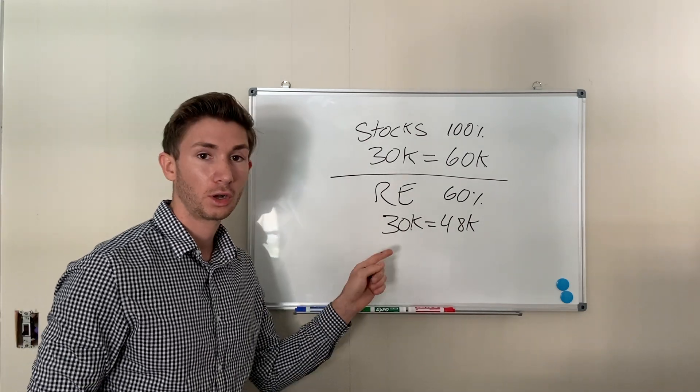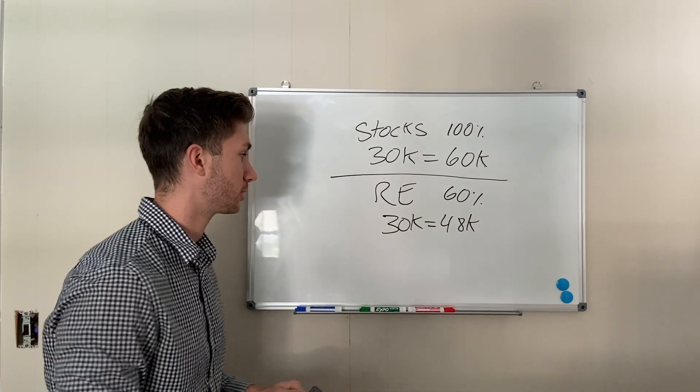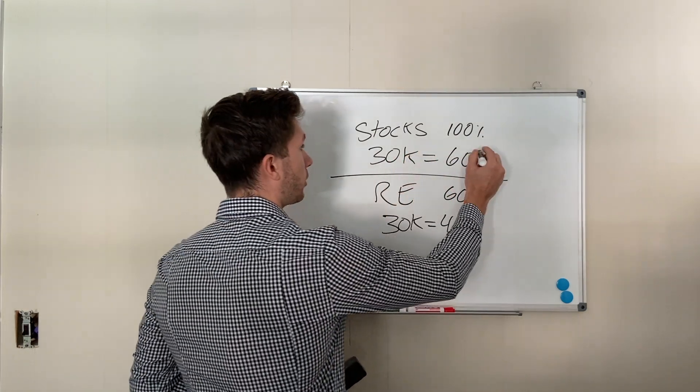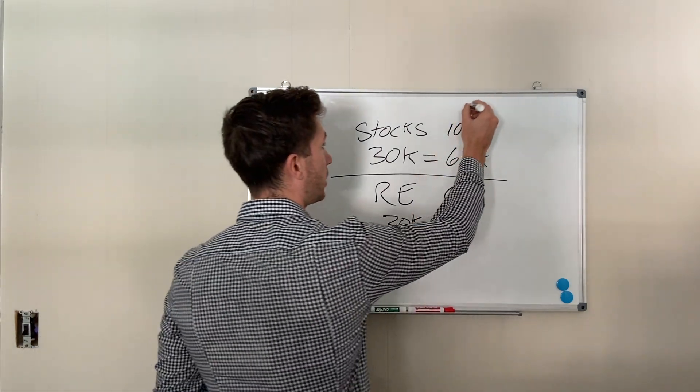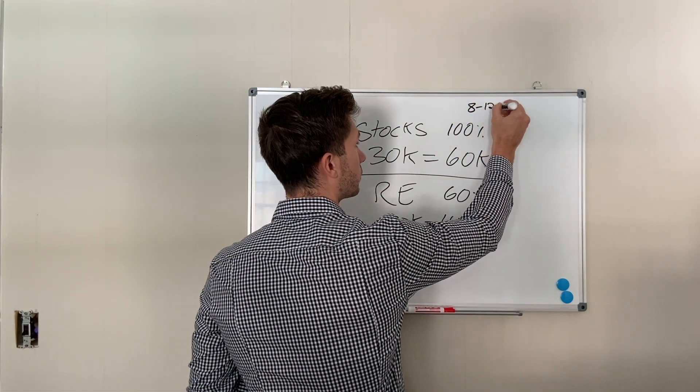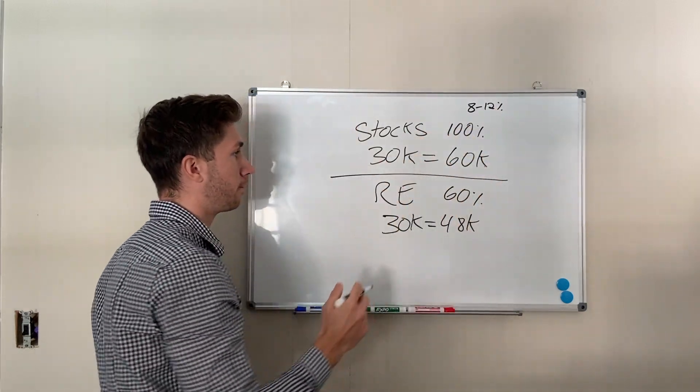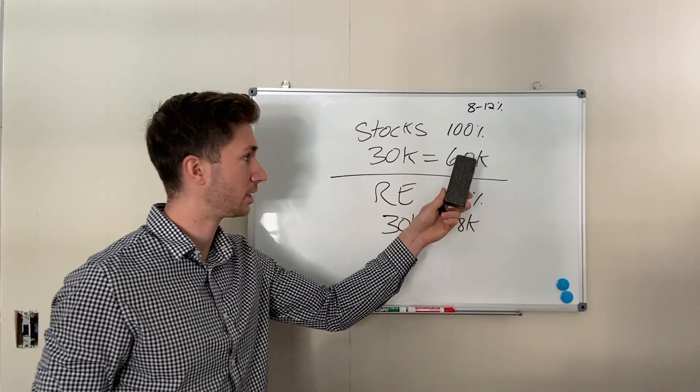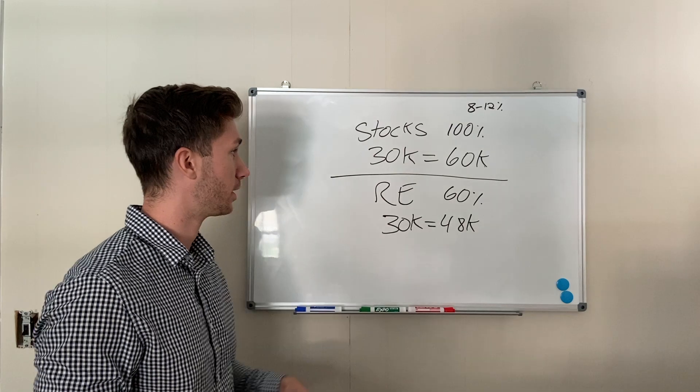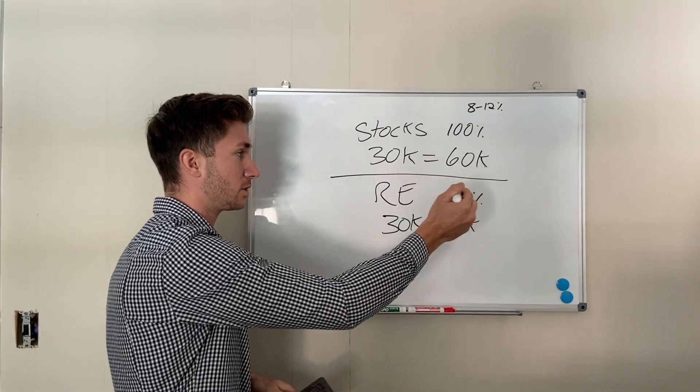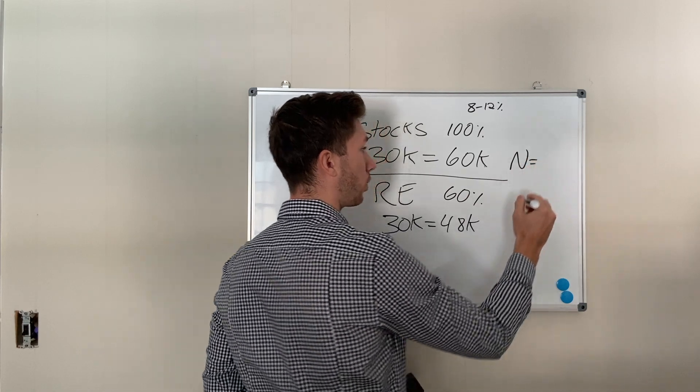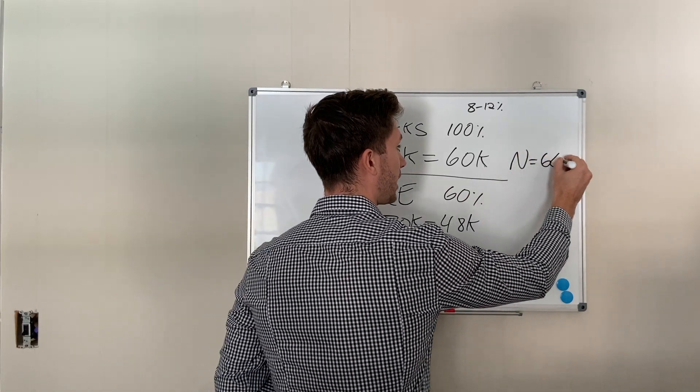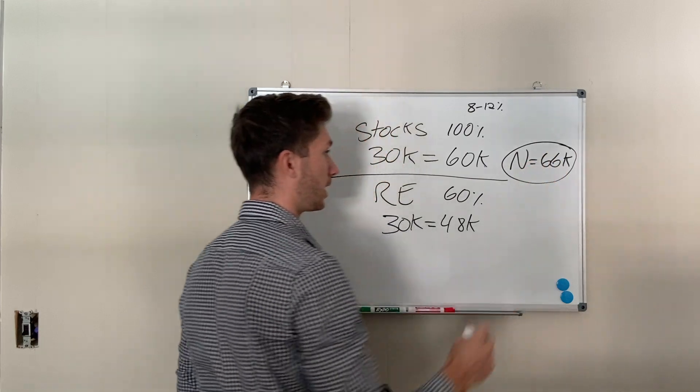And here's why. Let's take a look at one year, what my net worth is. So in the first scenario, stocks appreciate on average eight to twelve percent a year. So let's say that my sixty K appreciates ten percent over the next year. That's six thousand dollars. So now my total net worth, N for net worth, is going to be sixty-six thousand dollars by investing in stocks.